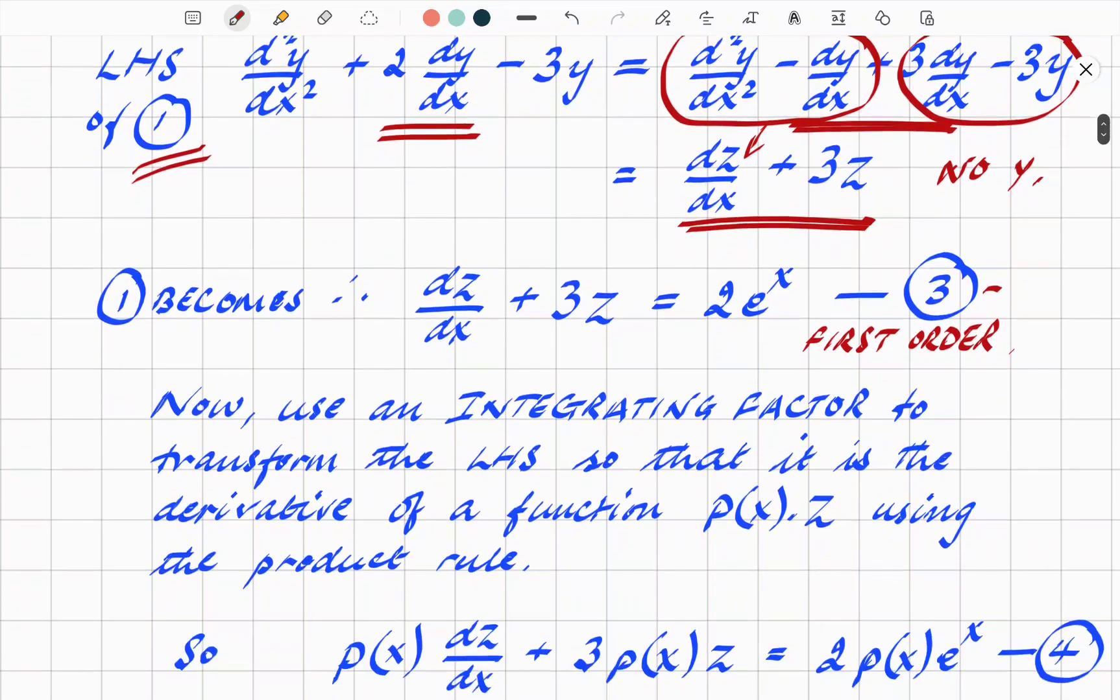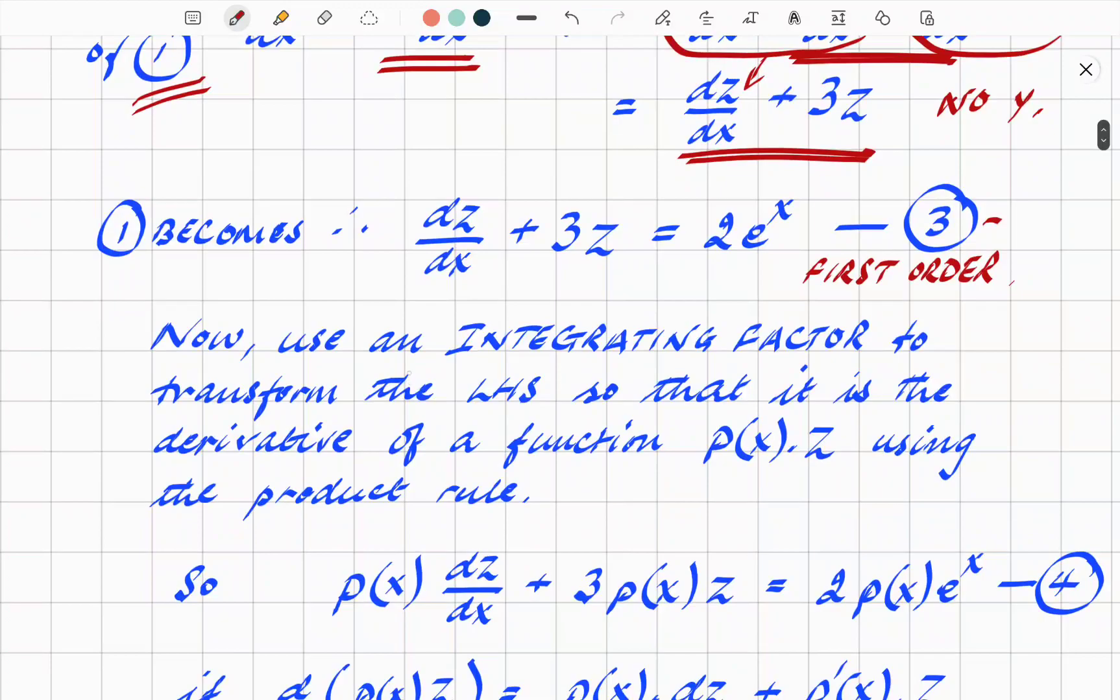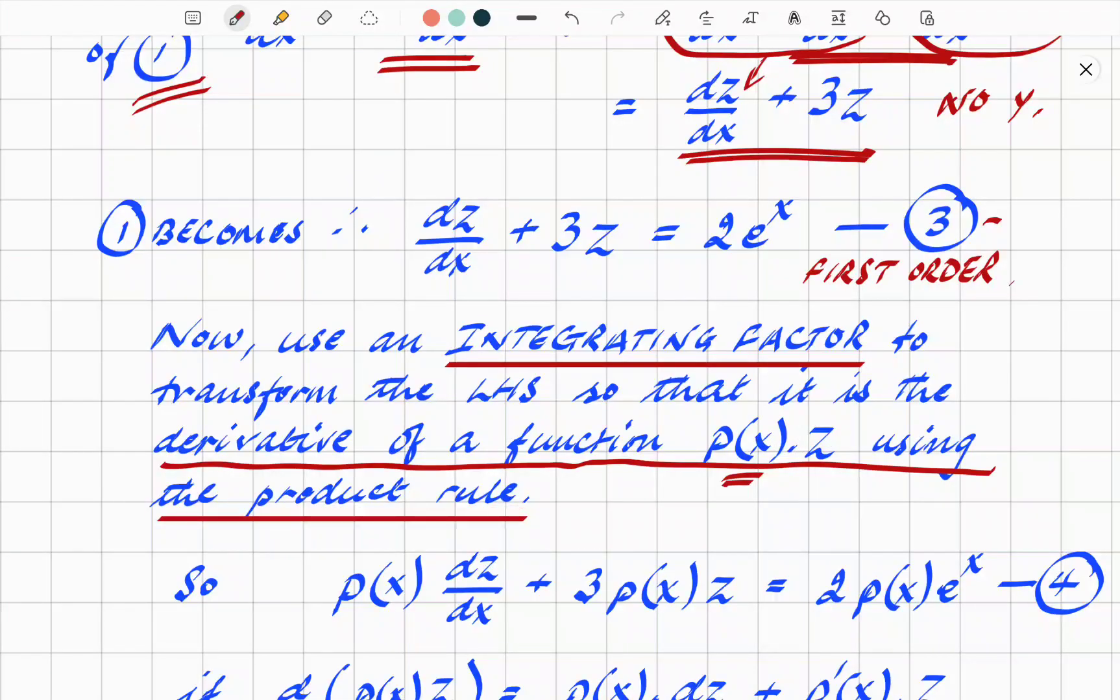Now we're going to get into the actual integration, how to solve this. Use an integrating factor. Those of you who have studied partial differential equations will know that you need an integrating factor to transform the equation itself into something that we can actually integrate and reorganize. In this particular case, we're using it so that it's going to be like the result of a product rule. We're going to turn the left-hand side, multiply everything by p(x), a function, an unknown function at this stage, p(x) times z, and use a product rule on it. I'll show you what that means.